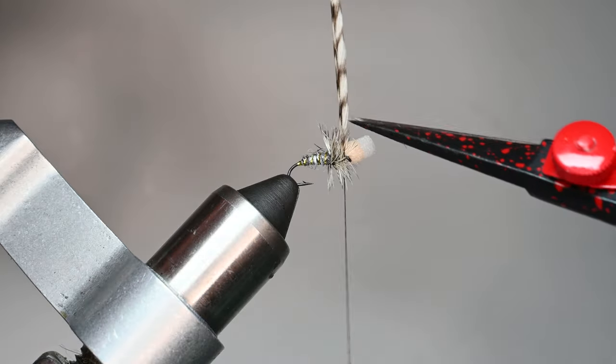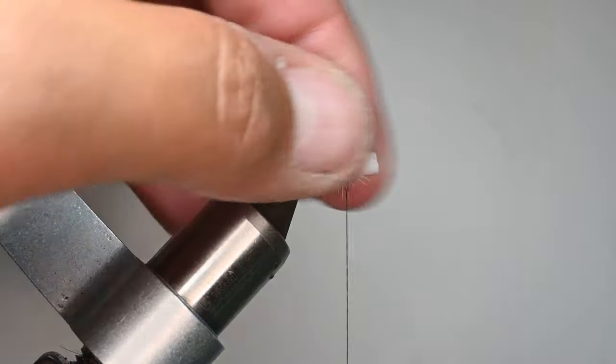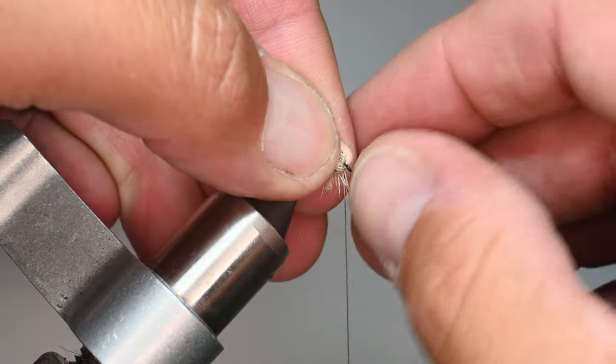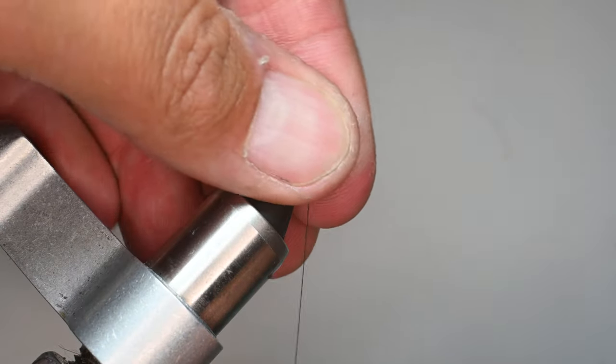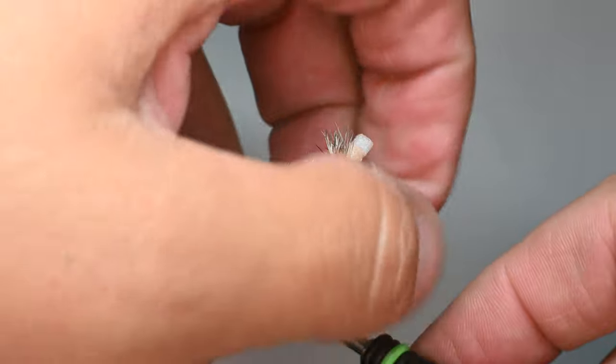The key is I'm not going to trim the stem flush down. I'm going to leave a little bit out. That foam head's not going to deter, it's not going to prick the fish's mouth or be an annoyance, but it's going to allow that thread to keep that hackle nice and secure in there.